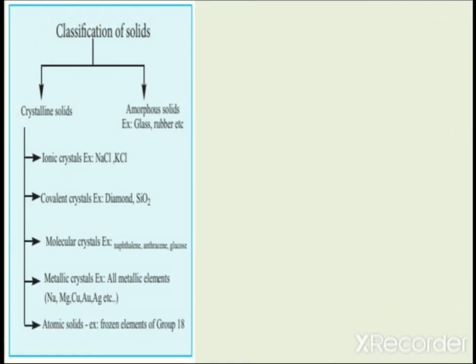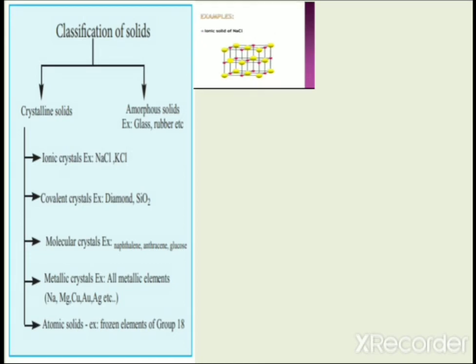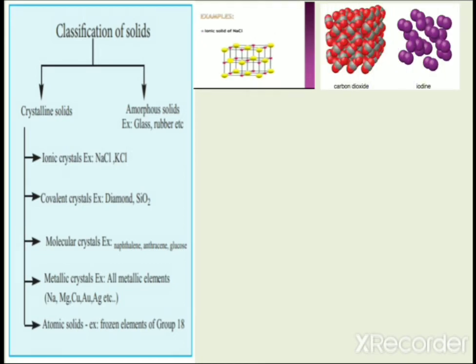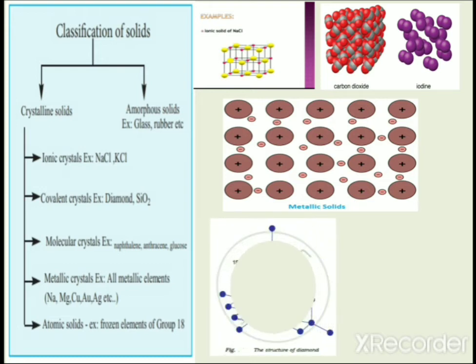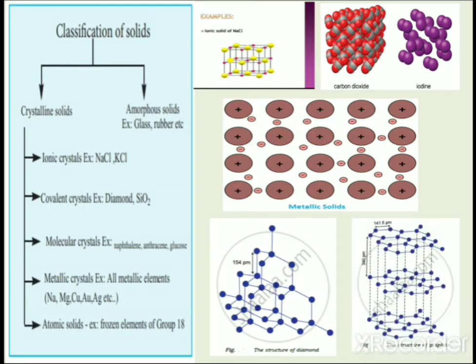To summarize the examples: ionic crystals include NaCl; molecular crystals include carbon dioxide and iodine; metallic solids show a sea of mobile electrons; and covalent or network solids include diamond and graphite, which are giant molecules.